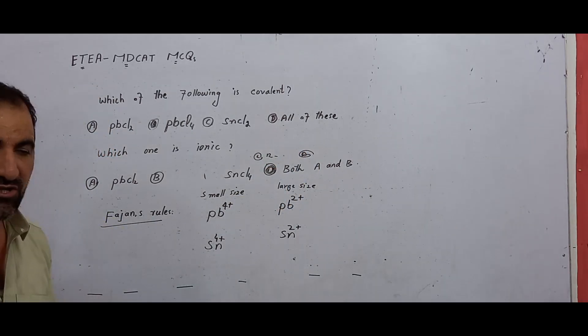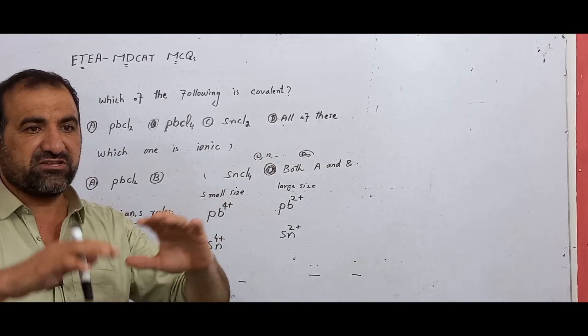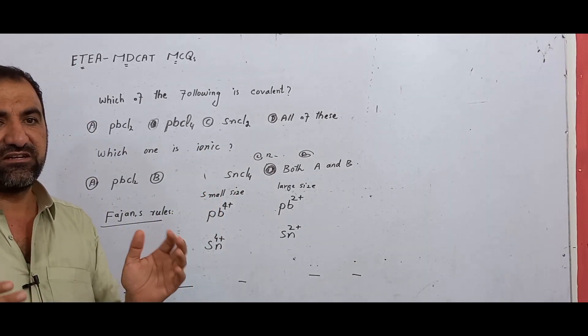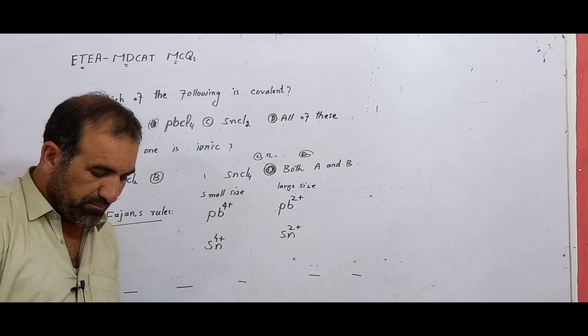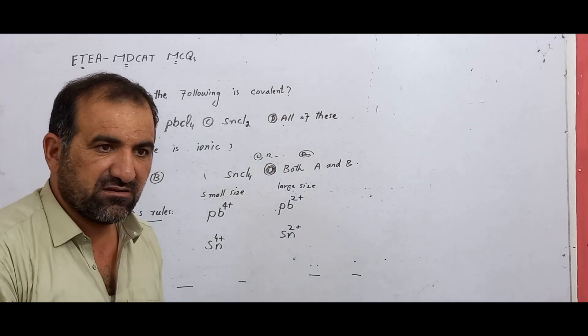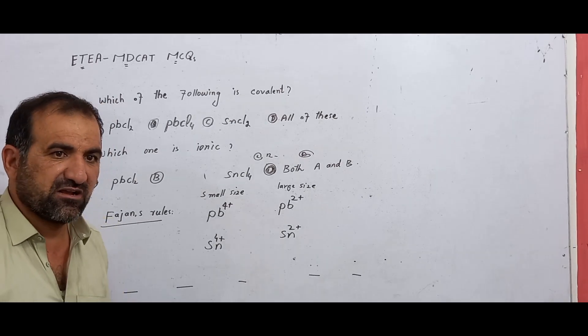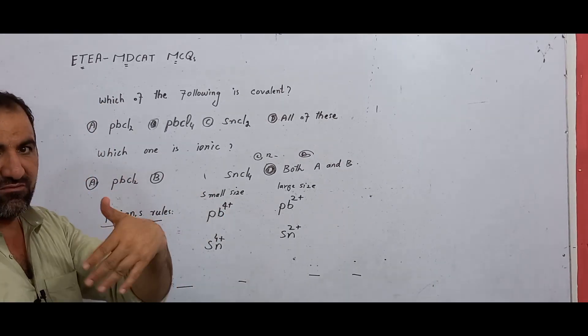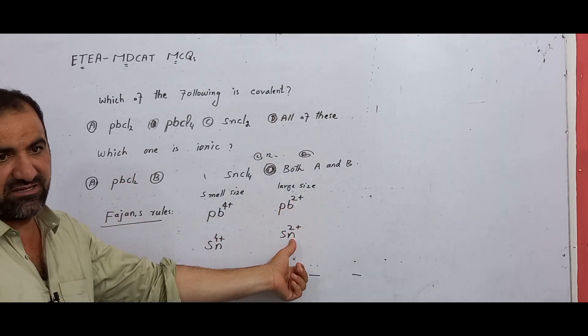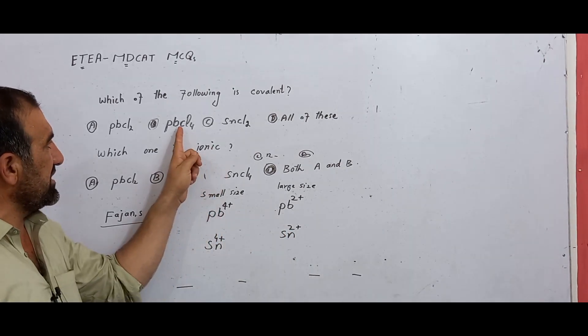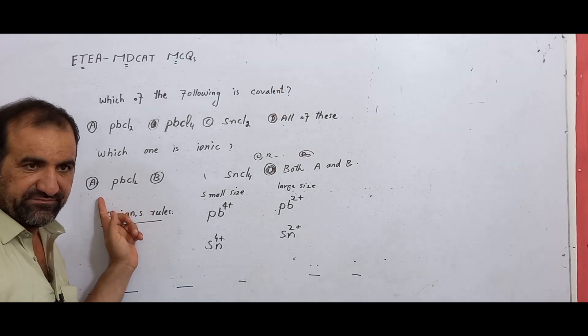Down the group, the inert pair effect increases. As atomic mass and atomic number increase, the inert pair effect causes the plus two state to become more stable. For lead, PbCl2 is more stable than PbCl4. PbCl2 is stable.